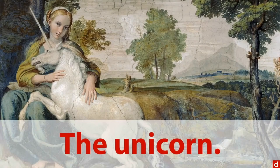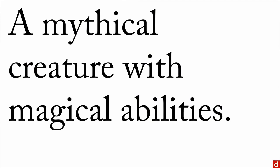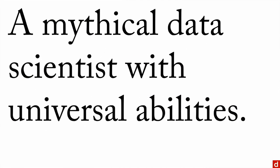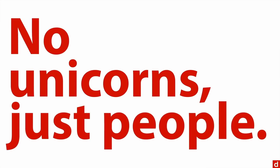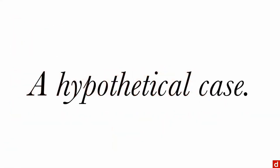Just like in ancient history, the unicorn is a mythical creature with magical abilities. In data science, it's a mythical data scientist with universal abilities. But as we know from the real world, there are no unicorns — and there aren't many in data science either. So we have to find out how we can do projects even without one person who can do everything for everybody. Let's take a hypothetical case with some fictional people.